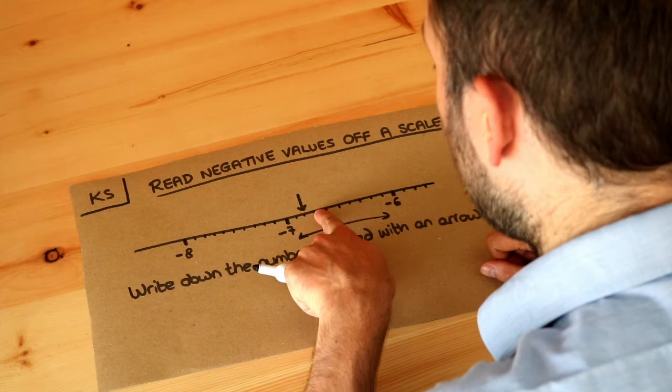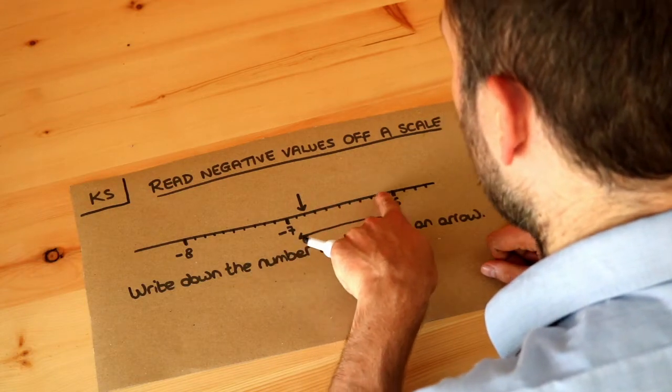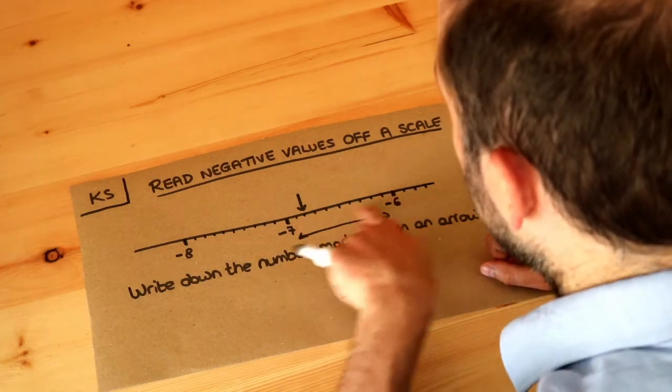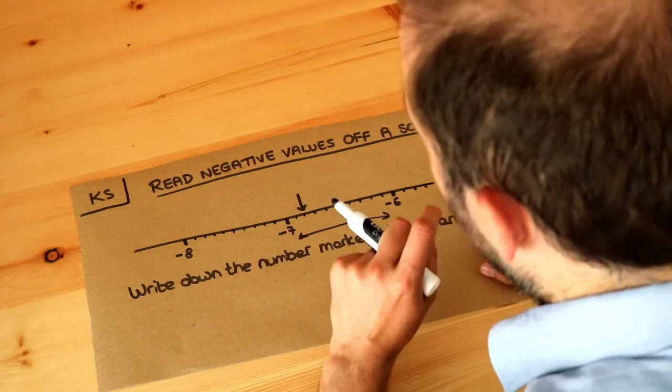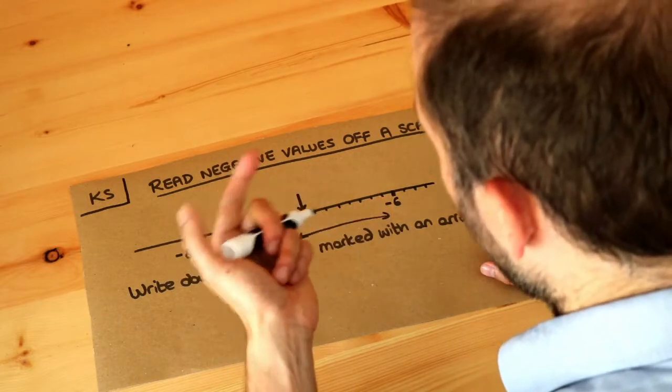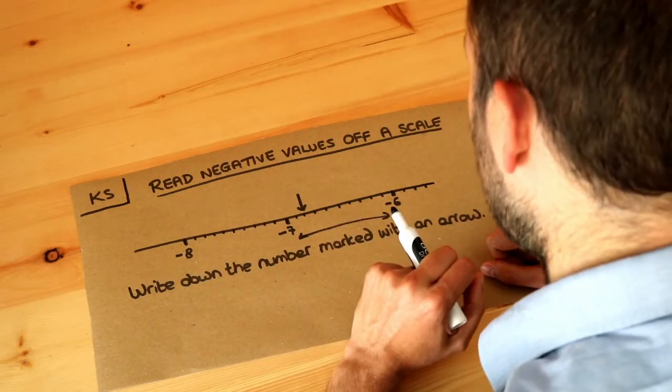So we can see one gap, two gaps, three gaps, four, five, six, seven, eight, nine, ten. So this is split up into ten equal bits.